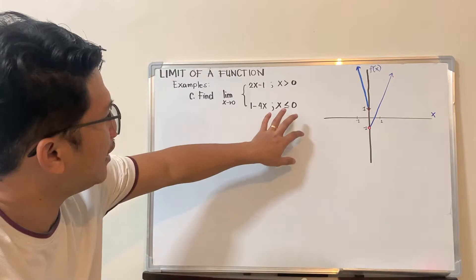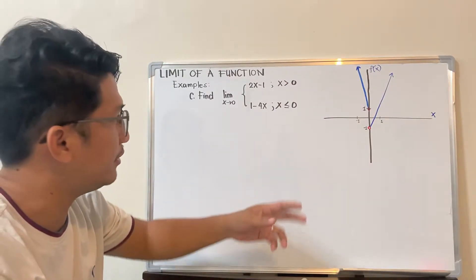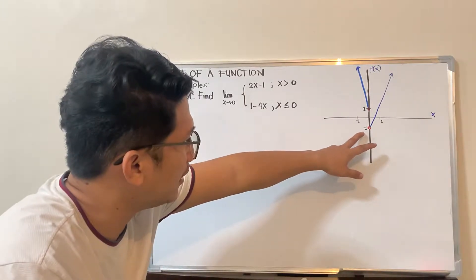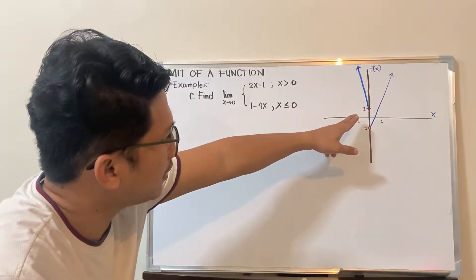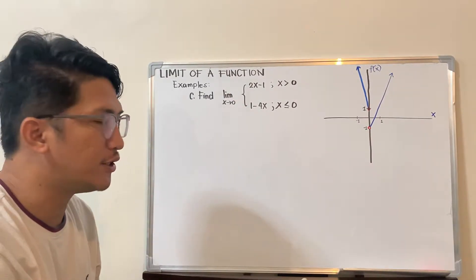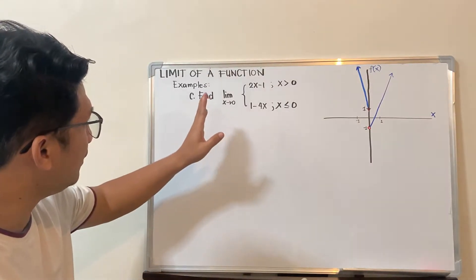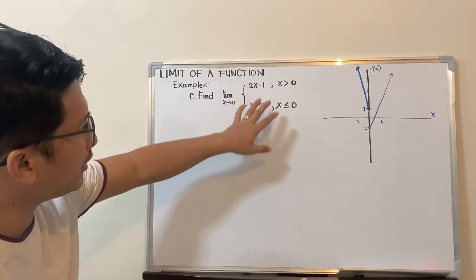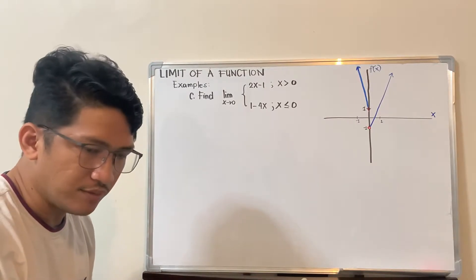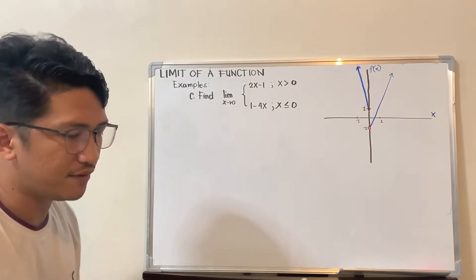The other piece is shaded (filled) because its condition is less than or equal to 0, so 0 is included there. This is a piecewise function — meaning it is made up of pieces. To evaluate the limit, we will find the limit of the piecewise function as x approaches 0. We will use the same table method — evaluating the limit from the left and the limit from the right.